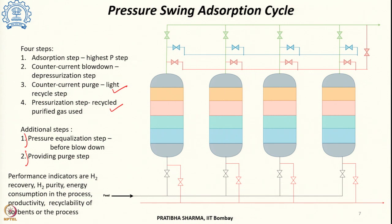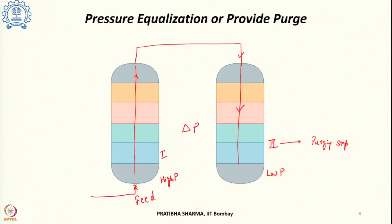The various performance indicators that decide the parameters of the process include: hydrogen recovery — how much hydrogen we get from the product stream; purity of hydrogen; energy consumption in the process; productivity; and recyclability of both the adsorbent and the process. The choice of adsorbent depends upon the feed gas, meaning the hydrogen production method, feedstock used, impurities present, and the desired final purity for the end-use application.